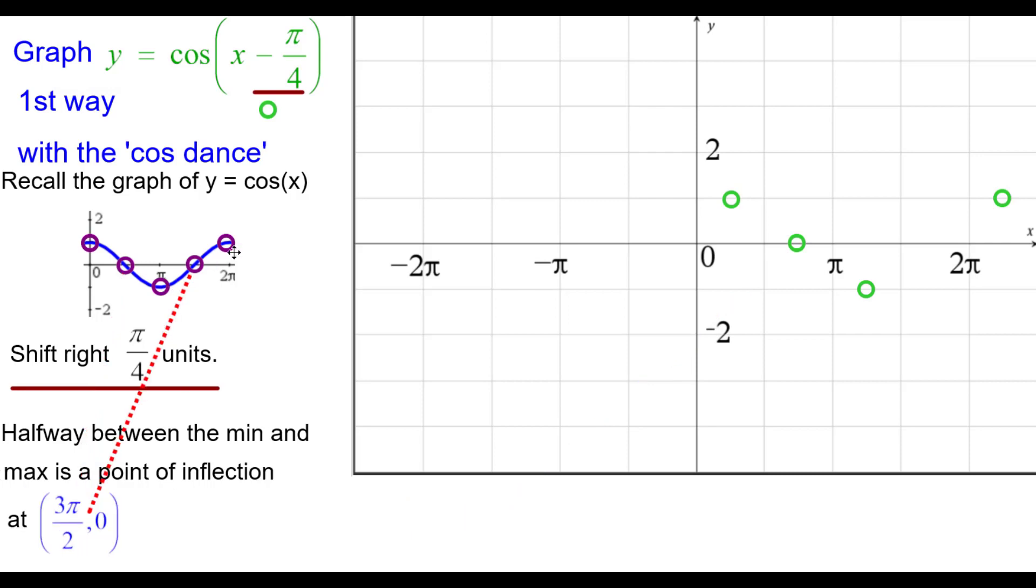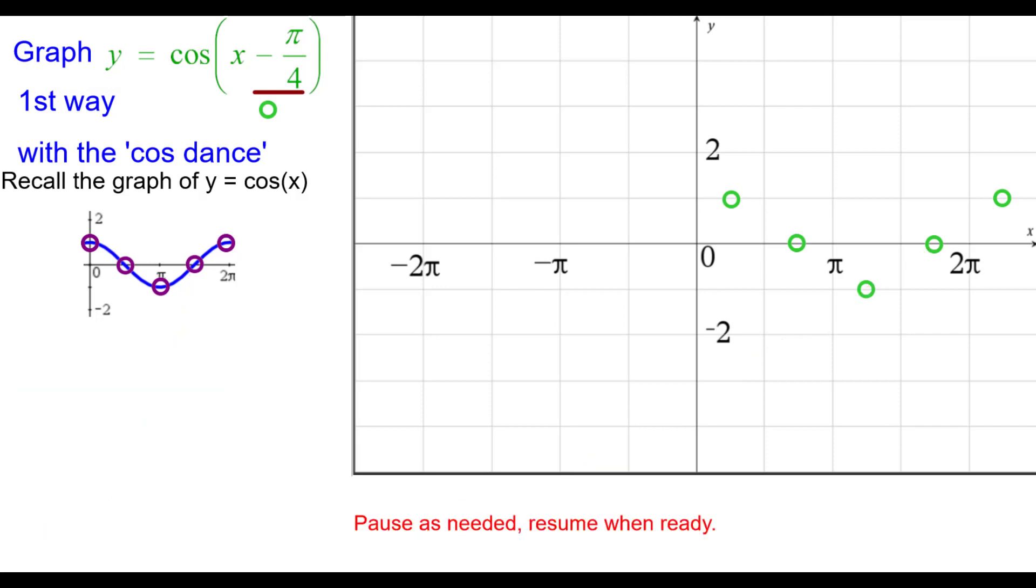And halfway between this min and then max is another point of inflection, and it will be shifted to the right another quarter pi to (7 pi over 4, 0). Pause as needed.